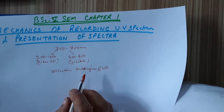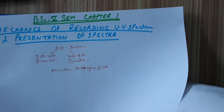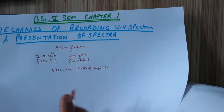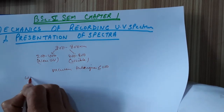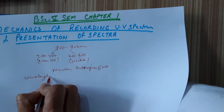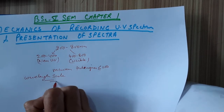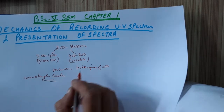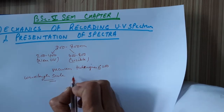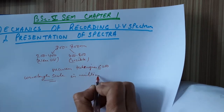These spectrophotometers will record the spectra on a wavelength scale, and this will be in the form of nanometers or millimicrons.